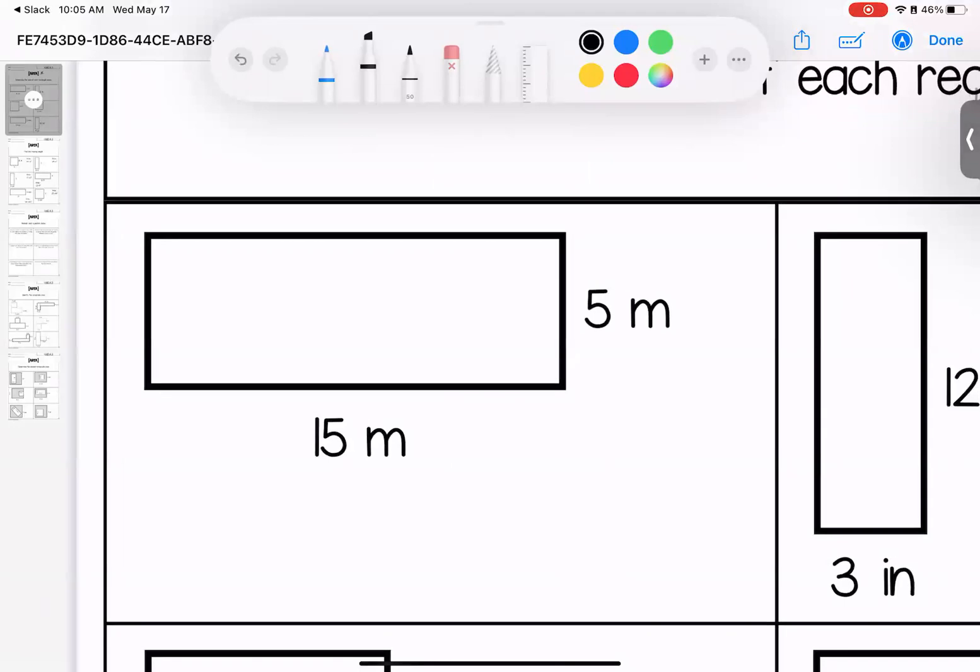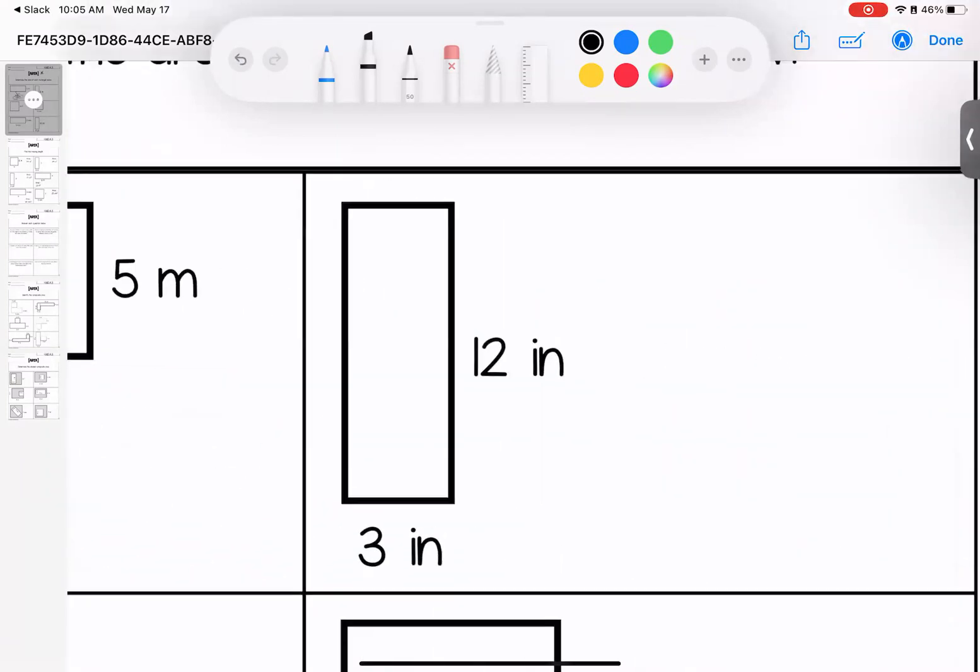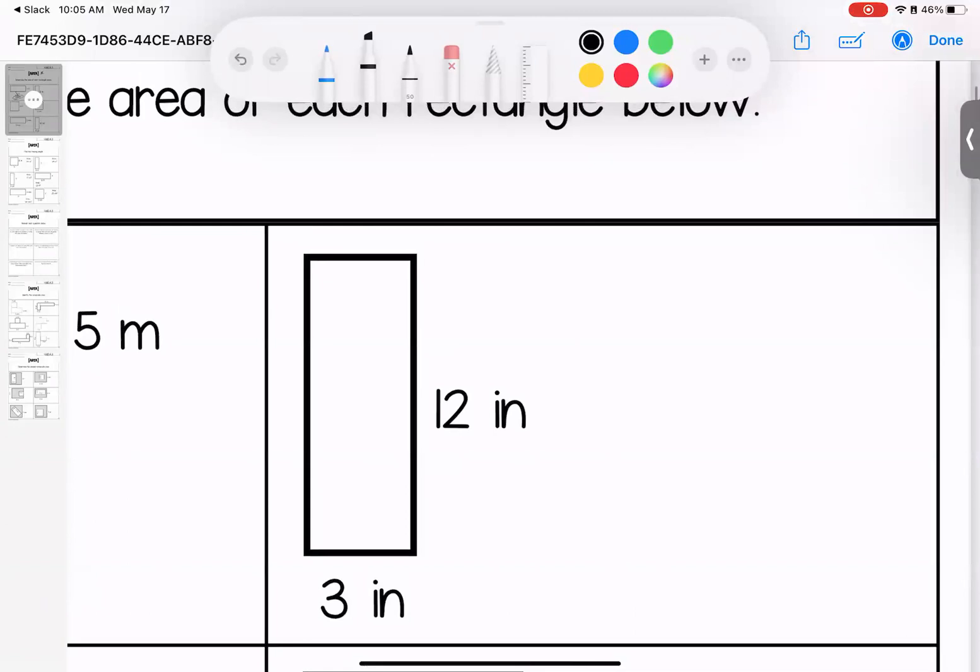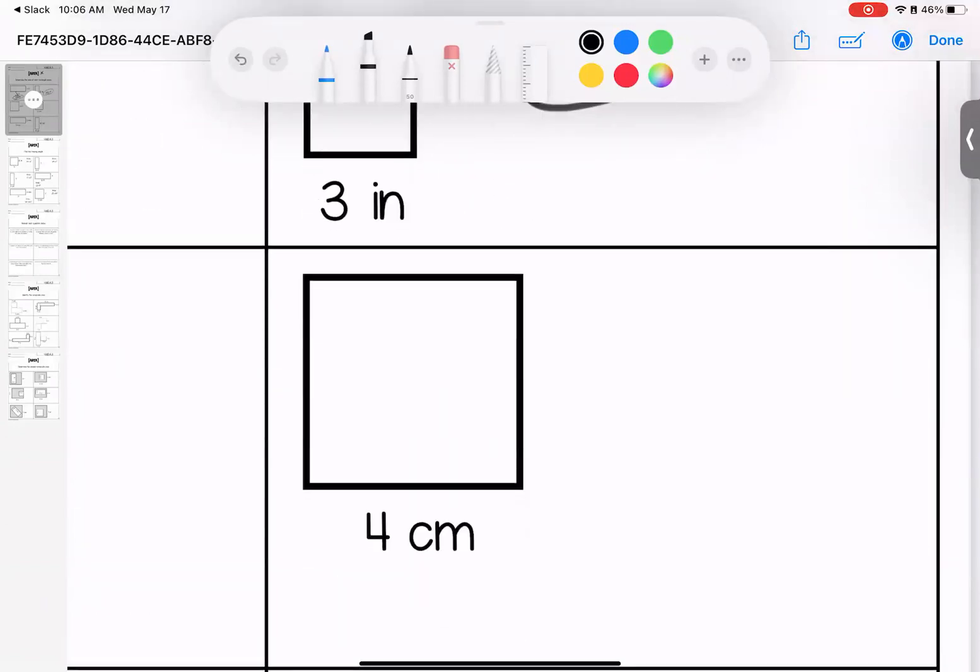For this first one we are doing 15 times 5, which gives us 75 meters. Over here, 12 times 3 gives us 36 inches. Here, 4 centimeters, but it's a square. Just because it's not labeled doesn't mean I don't have the measure.